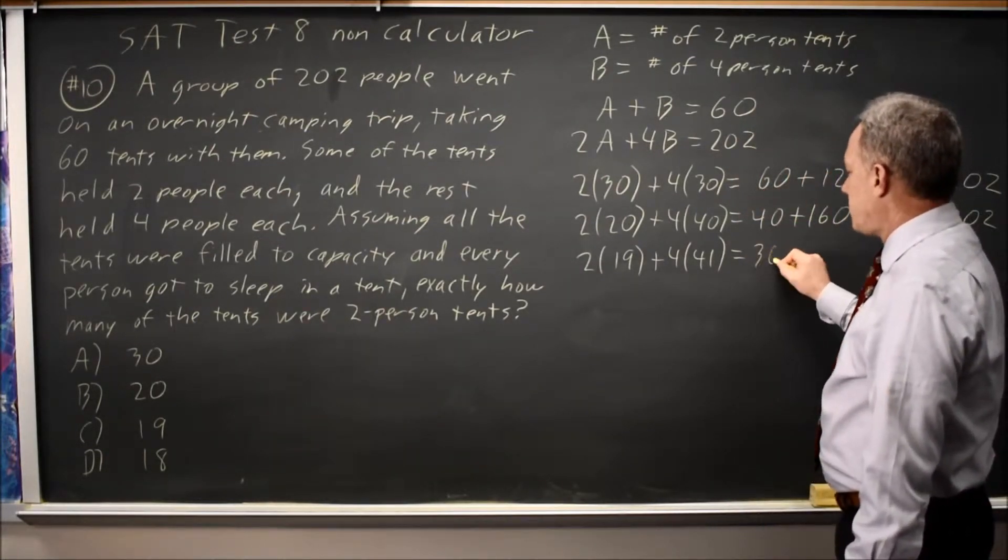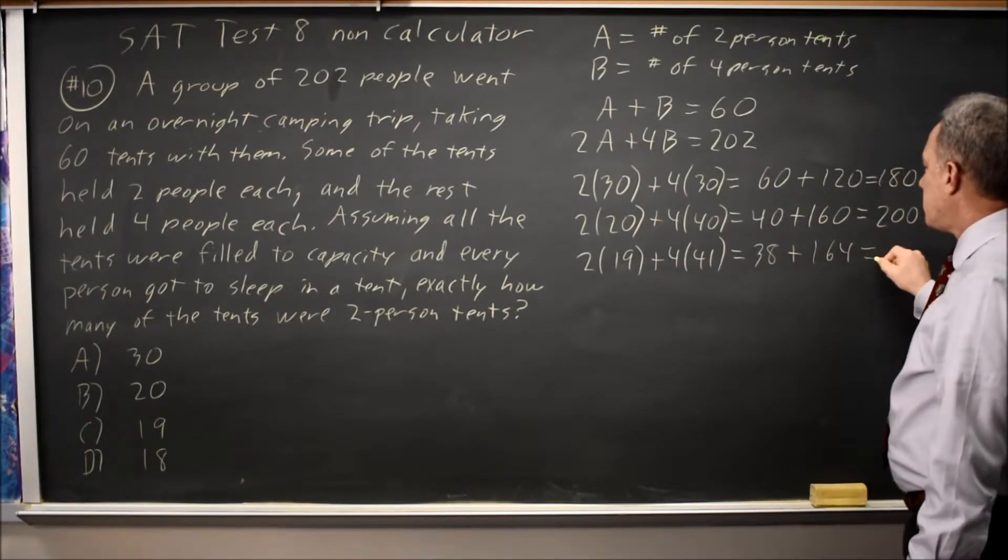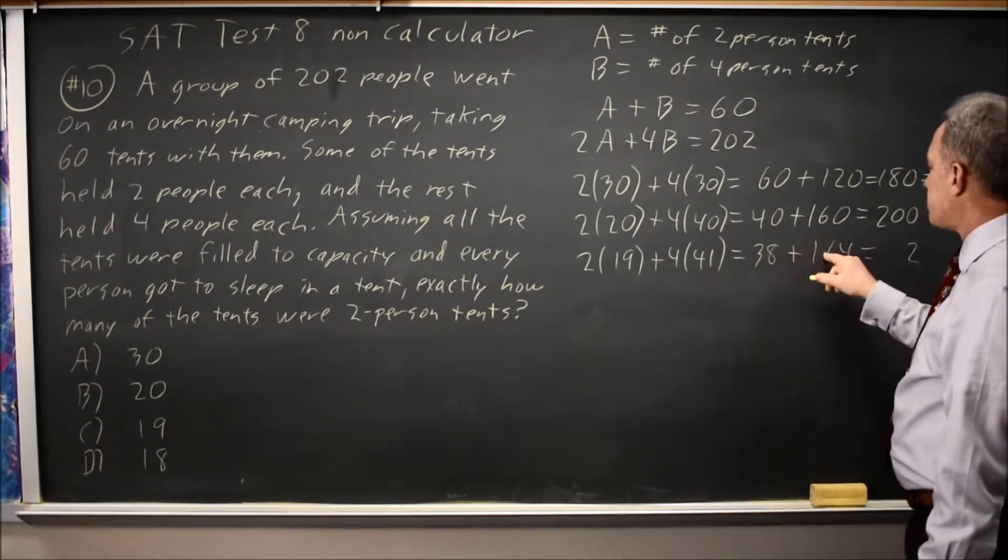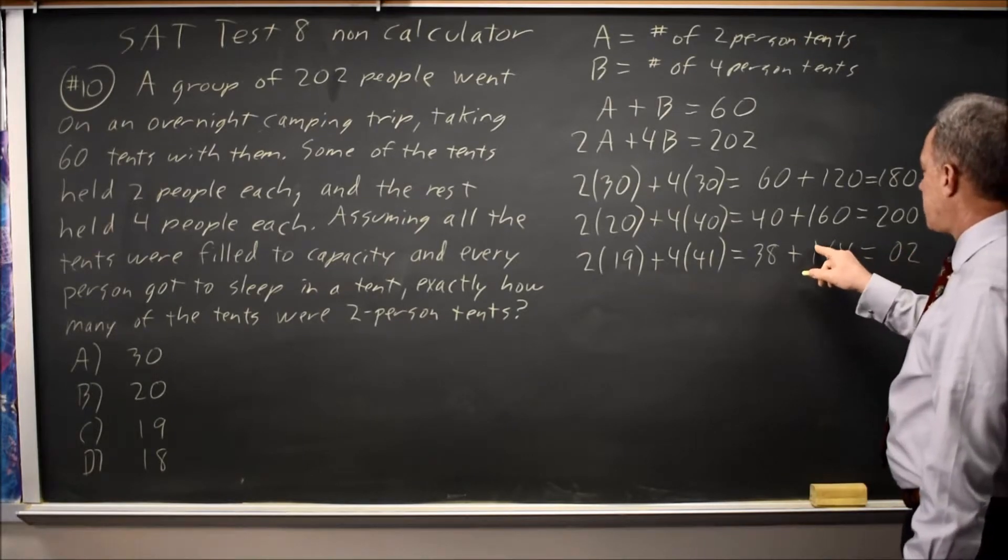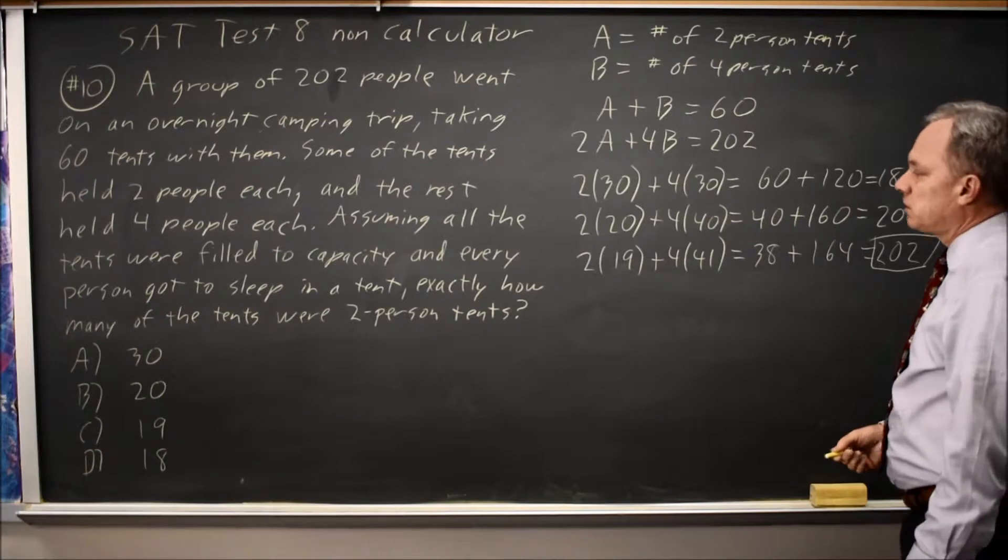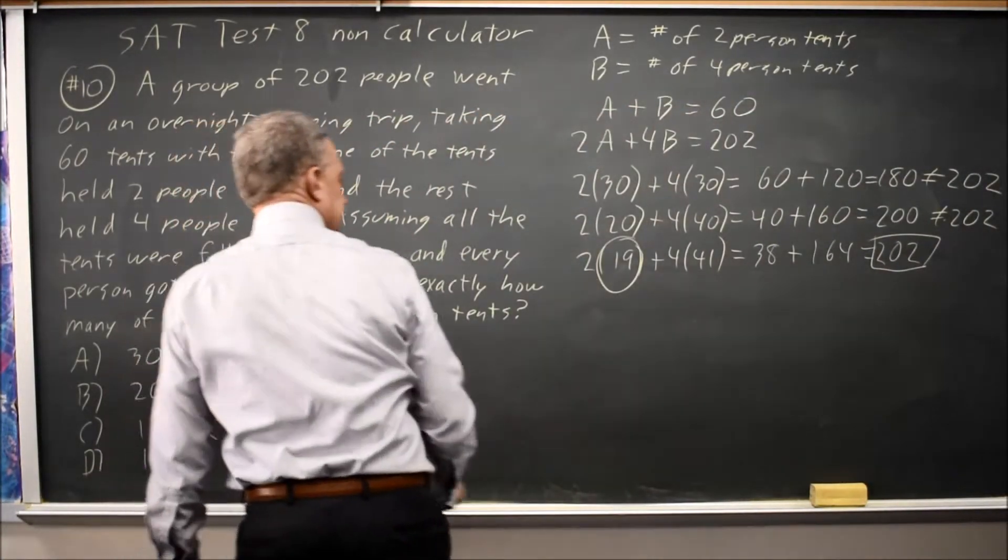Twice 19 is 38, four times 41 is 164, eight plus four is 12, carry a one, three plus six is nine, plus the one I carried is 10, carry the one, one plus one is two. Total of 202 people, which is what I'm looking for, so 19 is the correct answer. It's choice C.